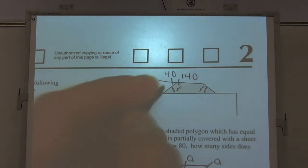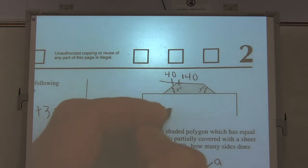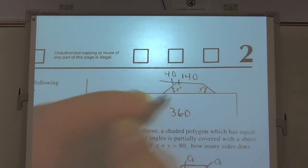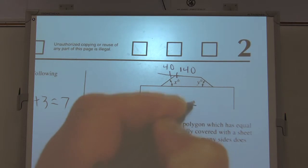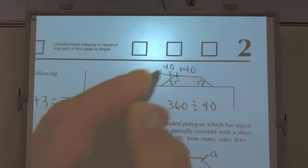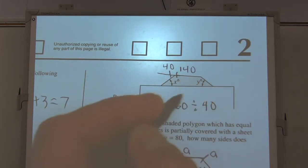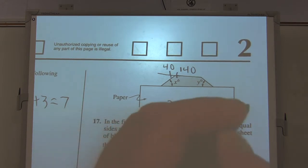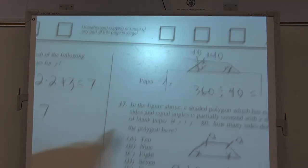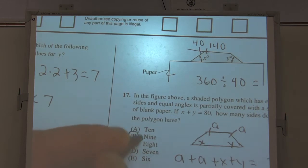And that means all the exterior angles of that regular polygon up there must be 40. And exterior angles of any polygon, they always add up to 360. No matter how many sides it has, the exterior angles always add up to 360. So if I take it and divide it by 40, that's going to tell me 360 divided by 40 tells me there's 9 equal exterior angles. So it's going to have 9 sides right there.